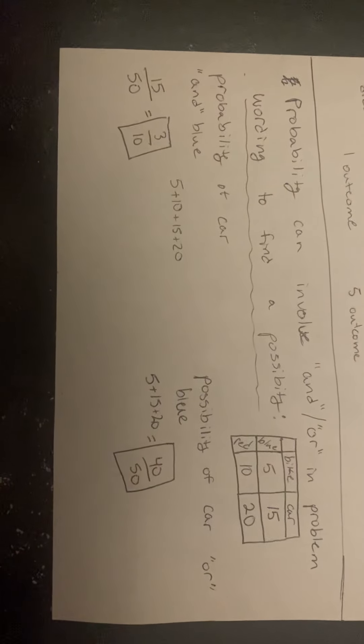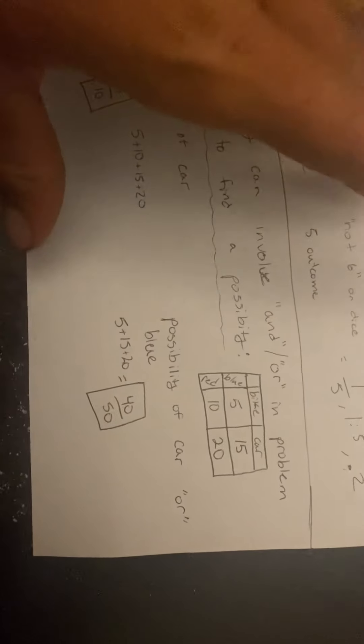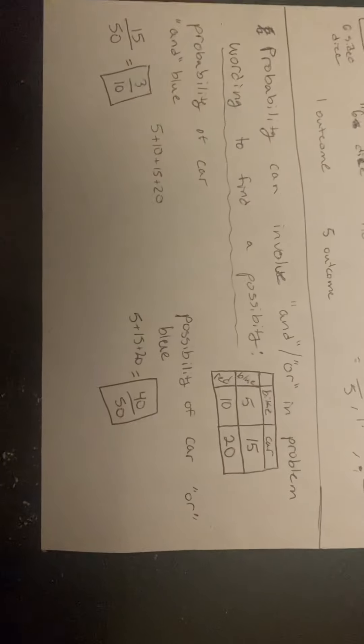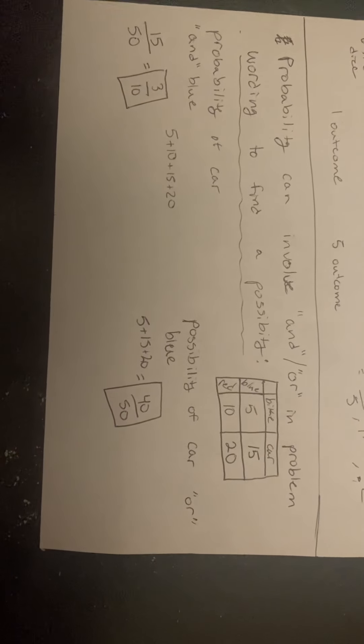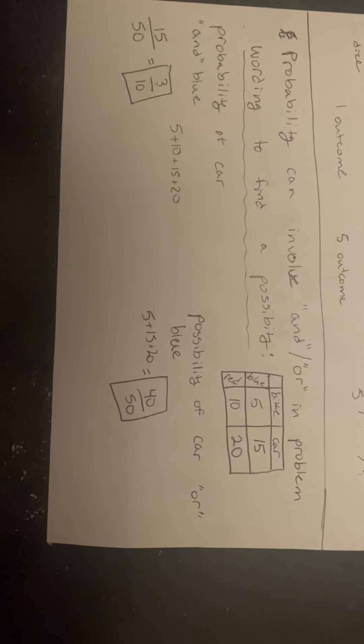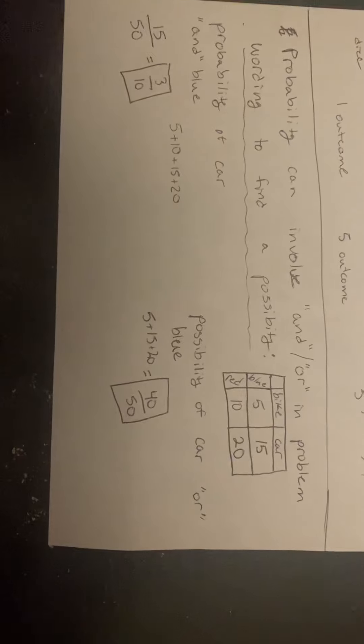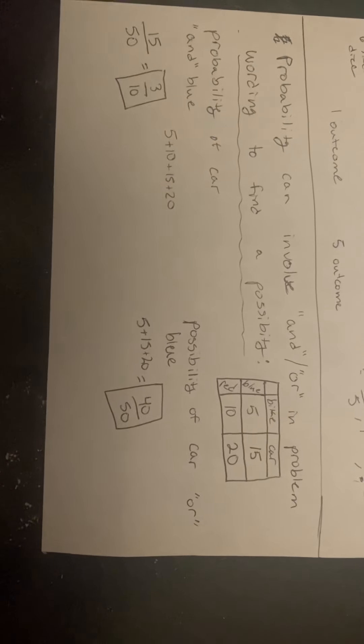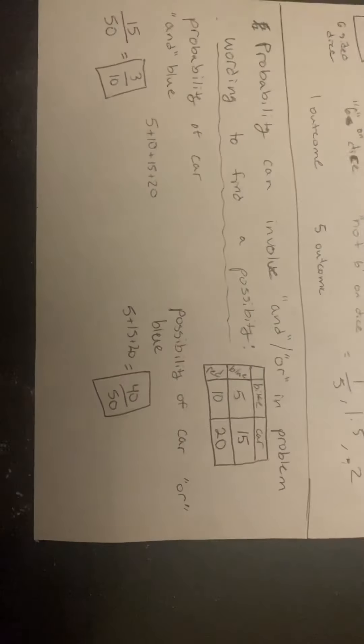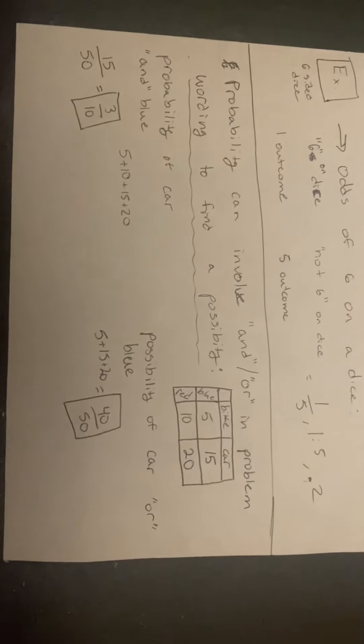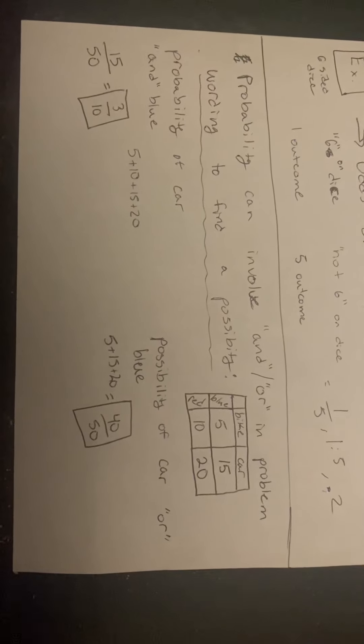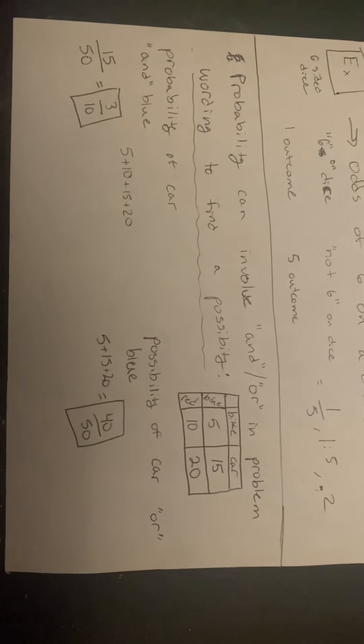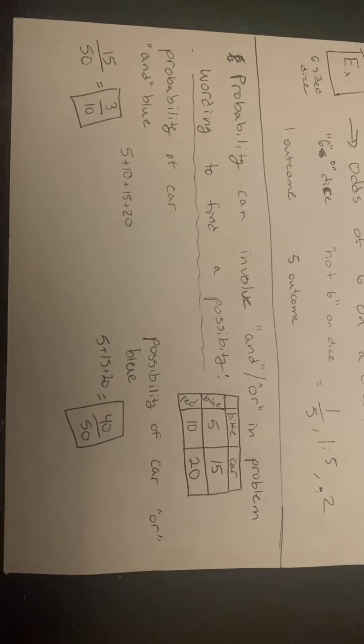Now that we went over 'and', we can move over to 'or'. The probability of having a car or blue. We do the same thing for the first step: we add up the total possibilities of each vehicle and its color, and we get 50.